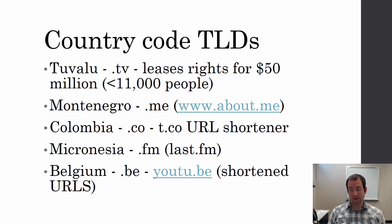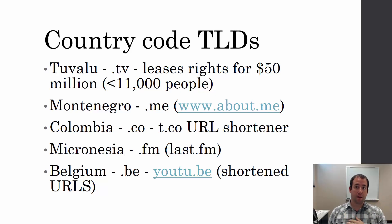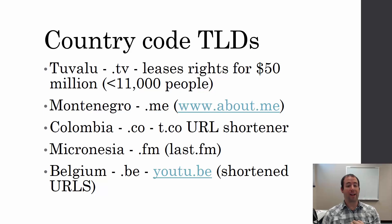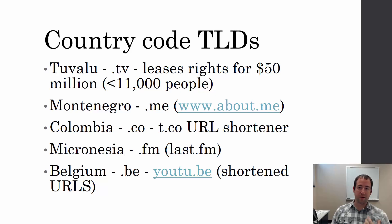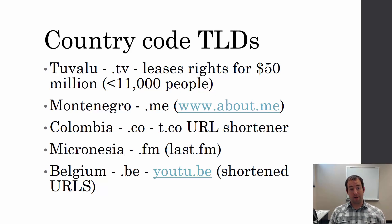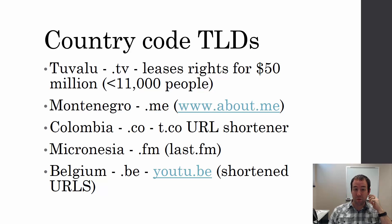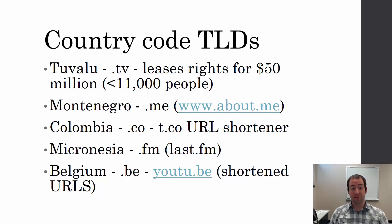.us is for America — the United States — and .uk for the United Kingdom. A couple of countries got lucky and struck it rich in terms of country code top-level domains. Tuvalu Island, an island nation with less than 11,000 people, got .tv.